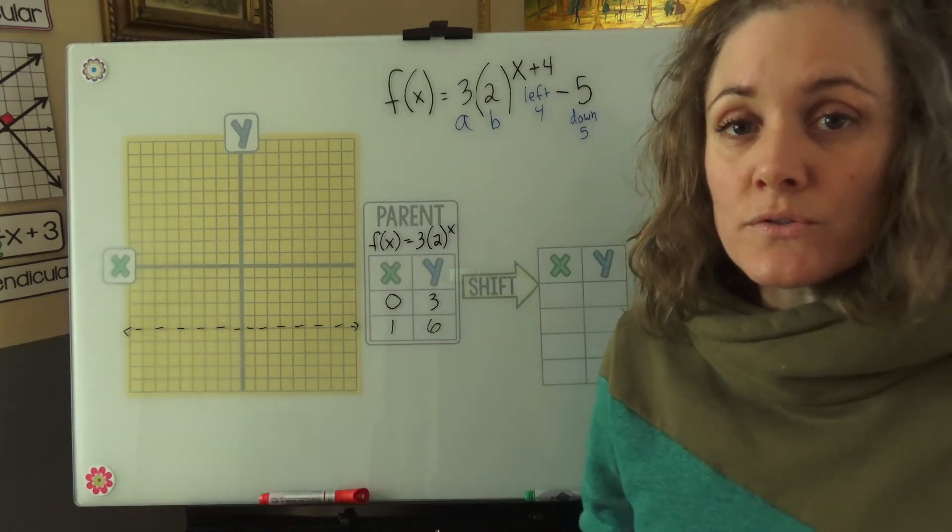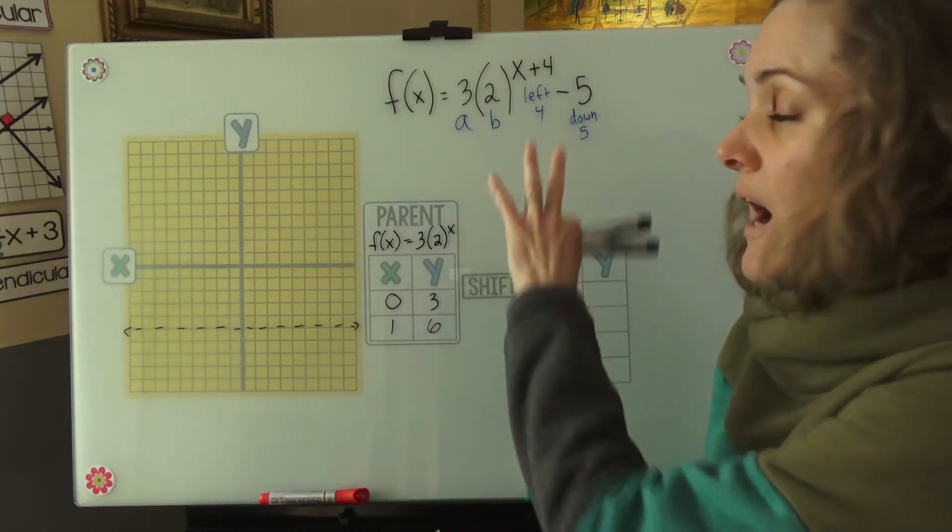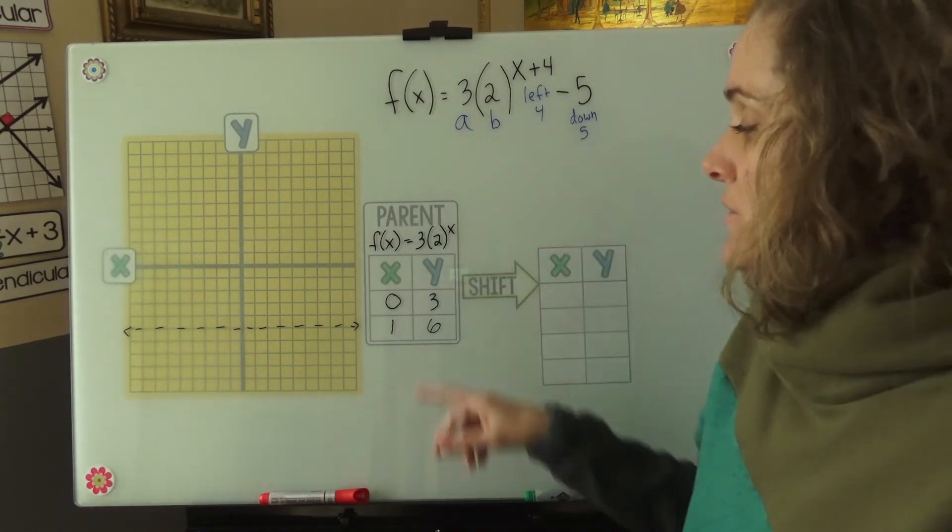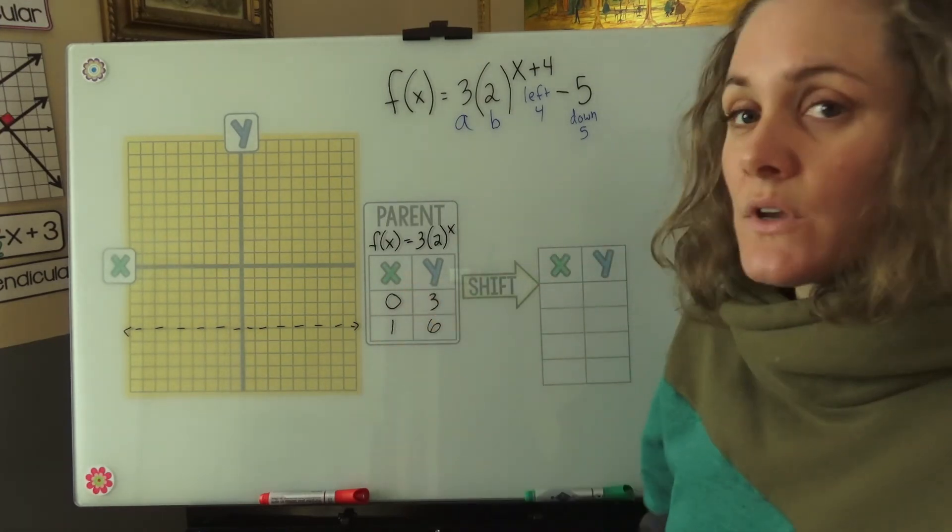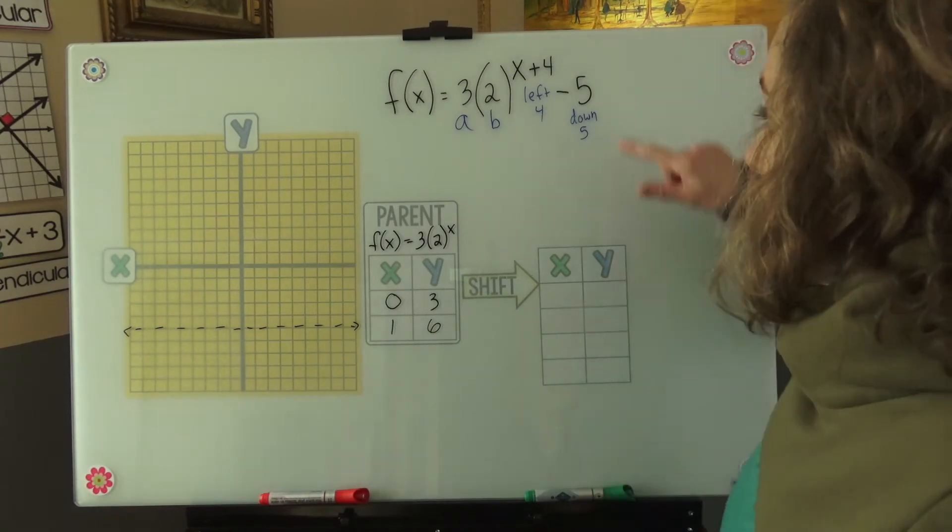Now let's shift those coordinates based on our function. We had a left 4, so for all of our x values, we'll be subtracting 4. And we had a down 5, so for all of our y values, we'll be subtracting 5.